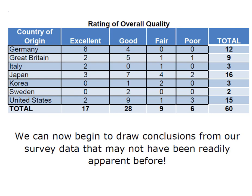The thing about reading a cross tabulation table is that this total here is the total of all of the responses for the rows, and this total down here is for the column. So we know that of the vehicles that were rated excellent, eight of them were German, two of them were in the United States.